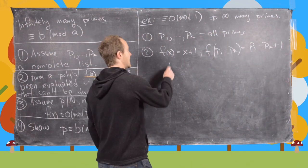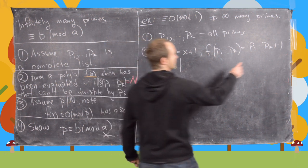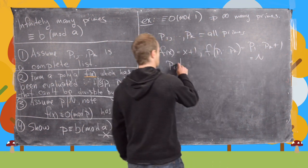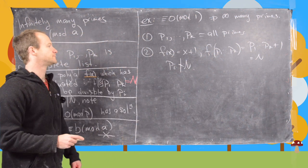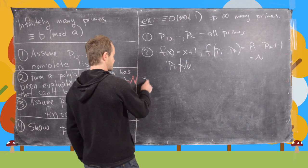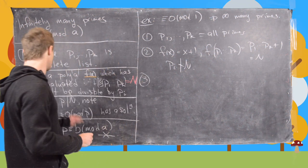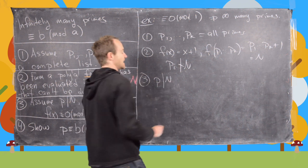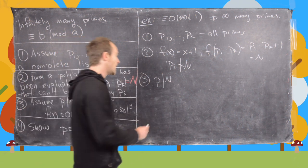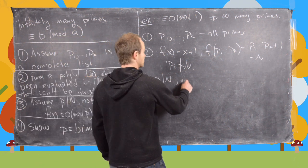And now notice that pi does not divide n where we've called n the output of that polynomial. But now the next thing that we can see is that we have a new prime that divides n, but this is not on our list.